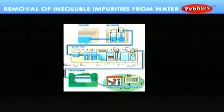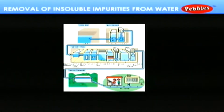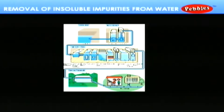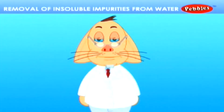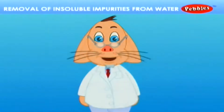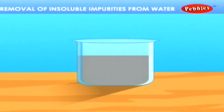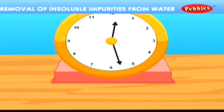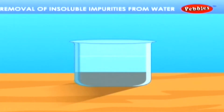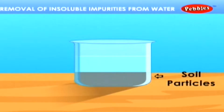The polluted water is purified by purification equipment through various processes. Let us discuss these processes in the following experiments. Take some impure water and allow it to rest for a few hours. The suspended soil particles in the sample of water settle down at the bottom as sediments. This is called sedimentation.